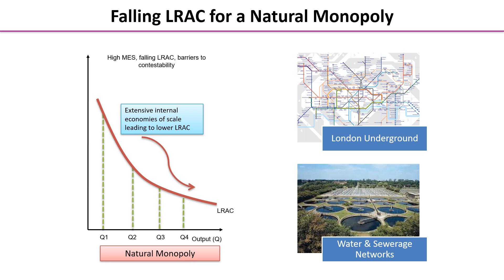A good example is the London Underground. We have one firm operating trains in all the tube lines and tunnels. If you were to have a competitor requiring a second set of tunnels between every single station, that would be a colossal waste of resources. It would be daft to have a second firm with a second network of distribution — so we consider it a natural monopoly.